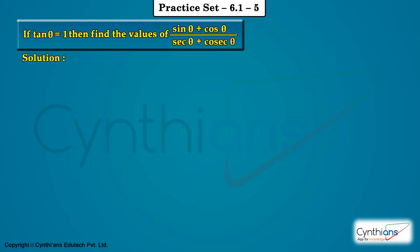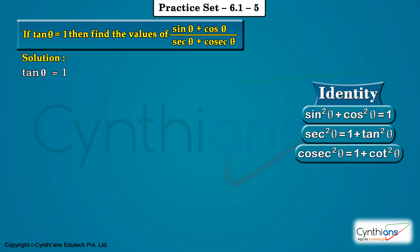We are going to use one method which we call IRIR — I stands for identity, R stands for reciprocal. Let's start with the identity for tan theta.